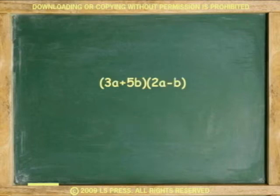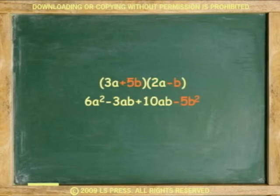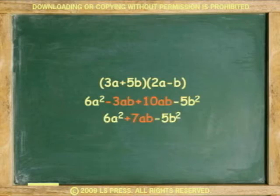Another example. Following FOIL — first terms: 3A times 2A equals 6A squared. Outside terms: 3A times negative B equals negative 3AB. Inside terms: 5B times 2A equals 10AB. Last terms: 5B times negative B equals negative 5B squared. Combine like terms: negative 3AB and 10AB. Answer: 6A squared plus 7AB minus 5B squared.